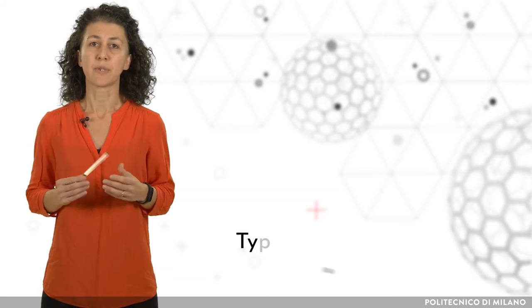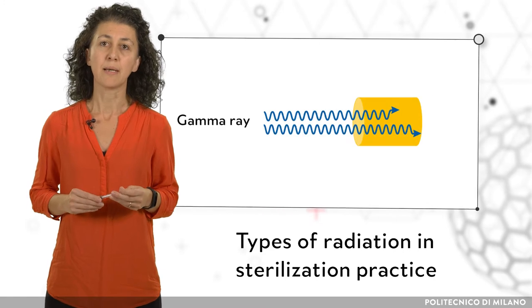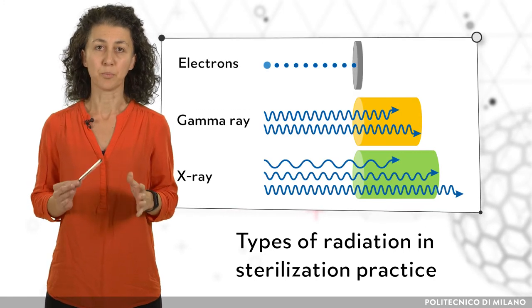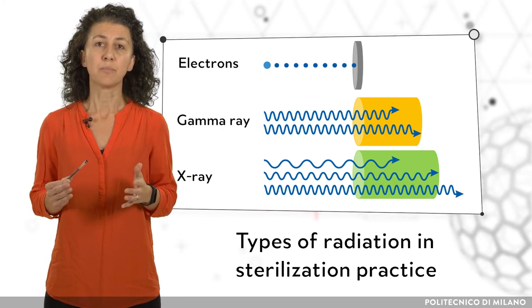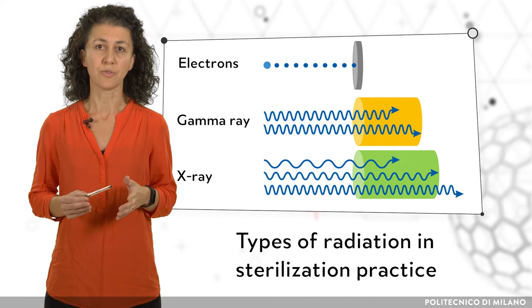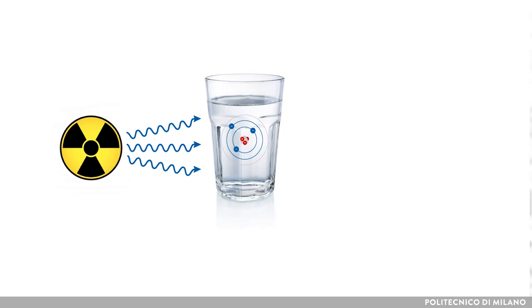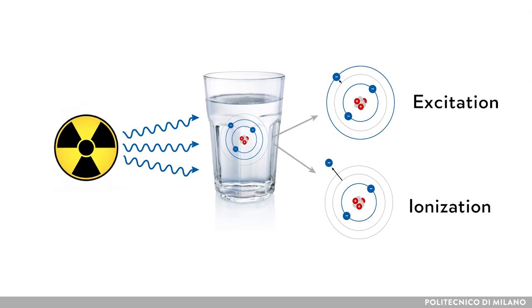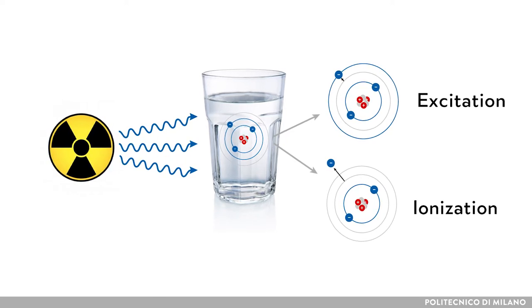Different types of radiation can be used for sterilization purposes: gamma, electrons and X-ray. Each one has different properties, such as penetration capability, and can be used for different applications, leading to the same beneficial effect. The radiation energy released in matter leads to the formation of ionized or excited species that give rise to reactive species responsible for the damage.